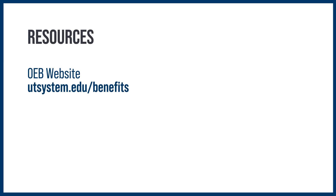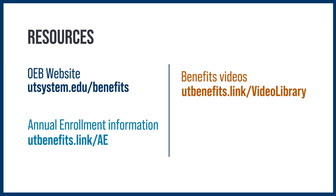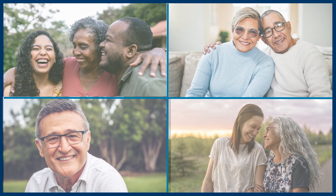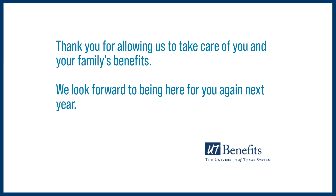The Office of Employee Benefits website is utsystem.edu/benefits. Find information specific to annual enrollment at utbenefits.link/AE, and visit utbenefits.link/video-library for a variety of benefits videos. For your HR benefits office, visit utbenefits.link/HR-contacts. Thank you for allowing us to take care of you and your family's benefits. We look forward to being here for you again next year.